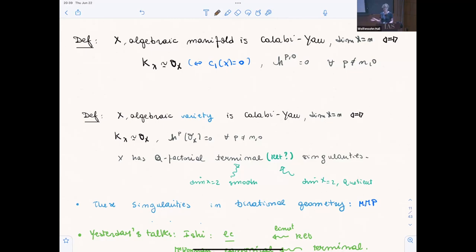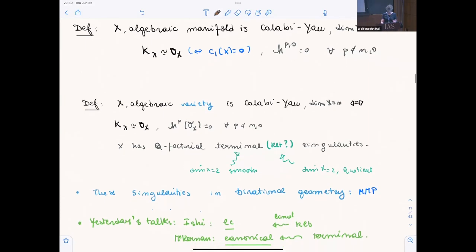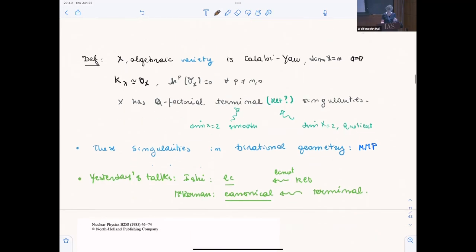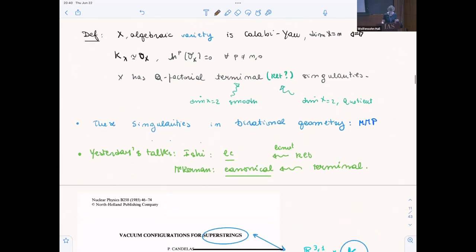Now using Calabi-Yau, I'll give the definition of manifold. First, manifold of dimension n with trivial canonical bundle. I'm writing it as an algebraic geometer. But then we want to go from manifold to variety in algebraic geometry. Algebraic varieties, Calabi-Yau dimension n, essentially the same condition, and we're adding singularities. The singularities are terminal or KLT.